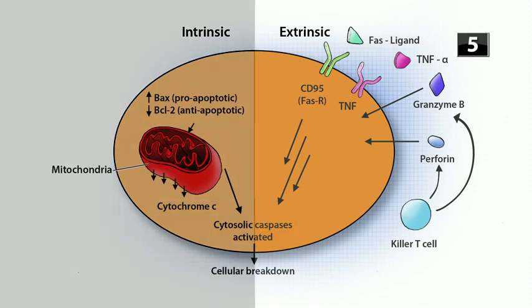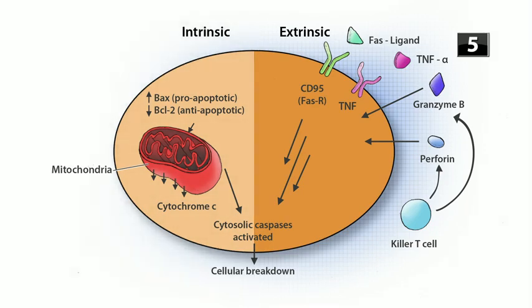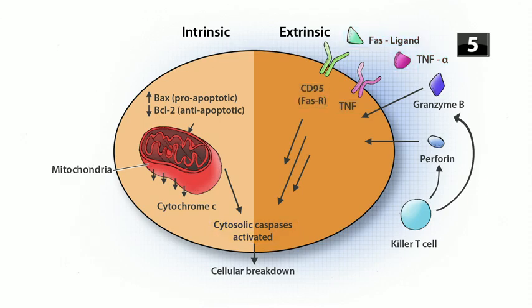Next, the extrinsic pathway — the signal comes from outside the cell. In the cell membrane there are two major receptors that can receive death signals: the TNF receptor and the FAS receptor, also known as CD95. They are activated by TNF-alpha or by the FAS ligand respectively, and once activated they transmit signals that cause the activation of caspases.